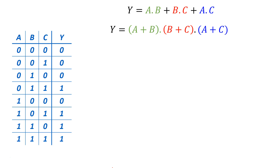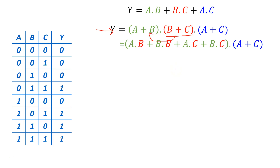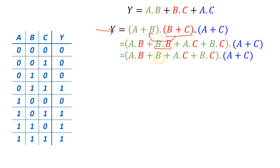Now are these two expressions equal? We can use Boolean simplification rules to verify. Let's start with the product of sums expression and distribute B OR C inside the first term. Distributing gives us: AB, B AND B (which is just B), AC, and BC. We'll leave A OR C by itself for now. Since B AND B equals B, we can factor out B.